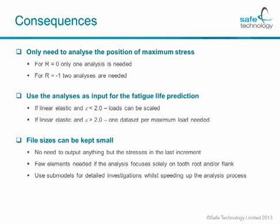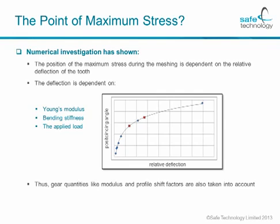For proper force transfer, you can't really leave one or the other out. You will need to mesh the root and the flank rather finely, but that is very low-cost labour in terms of the whole analysis work. To take that a step further, one could easily envision using submodels for detailed investigation and still speeding up the analysis process. Numerical investigations have shown that the position of the maximum stress during the meshing is dependent on the relative deflection of the tooth. This deflection is dependent on Young's modulus, the bending stiffness of the tooth, and the applied load, which allows us to produce a regression function where the relative deflection acts as a driver to calculate the positioning angle of the actual tooth as it's supposed to be assembled in Abaqus CAE. These dependencies also mean that gear quantities like the modulus and the profile shift factors are automatically being taken into account.